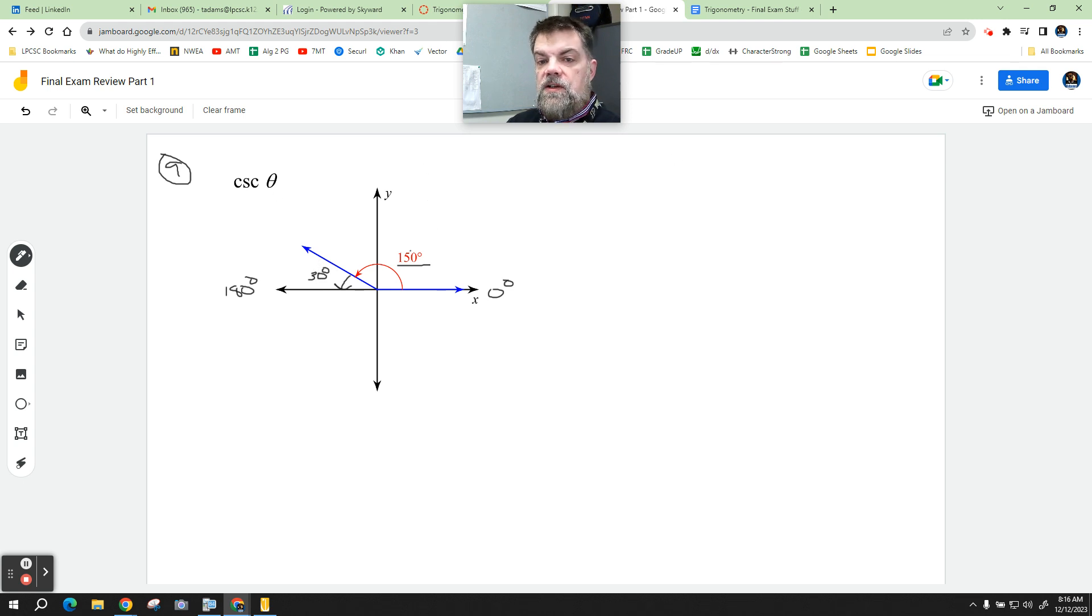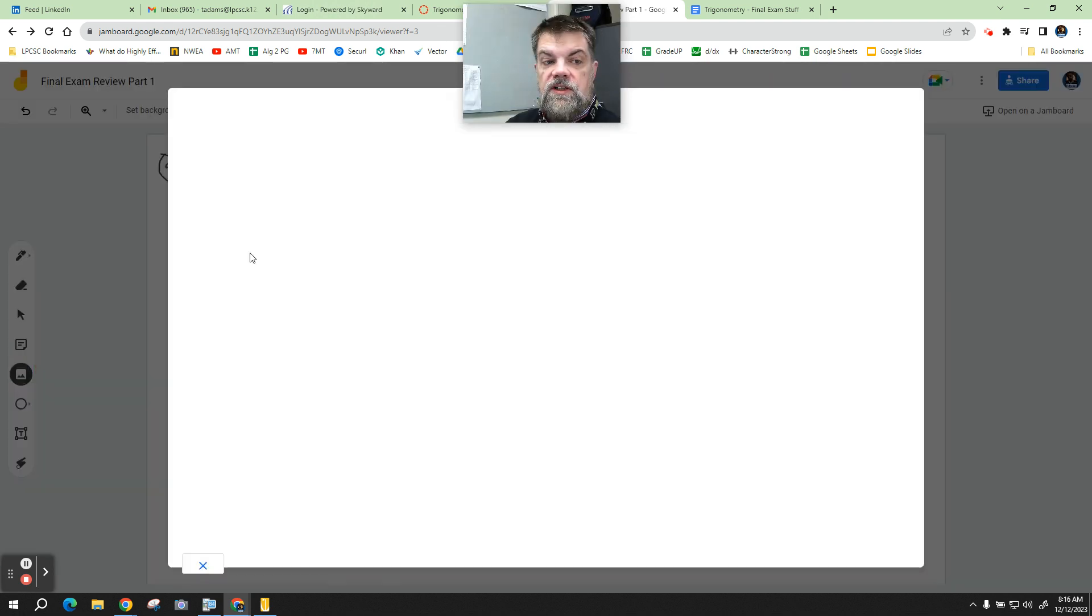Now, cosecant, remember that cosecant is the reciprocal of which function? Sine. Sine. Good. And also, on the unit circle, remember that our x value is cosine and our y value represents sine. So what you need is the unit circle. So what we'll do is we will put in the unit circle. How about that? Which I will let you use on the test.